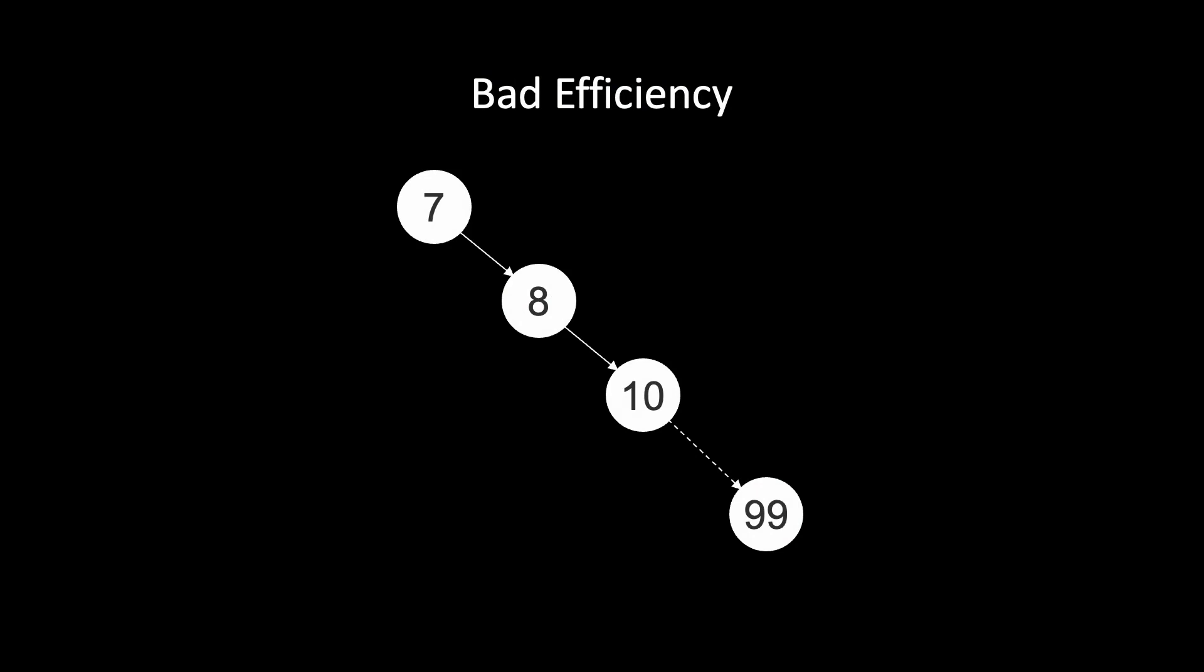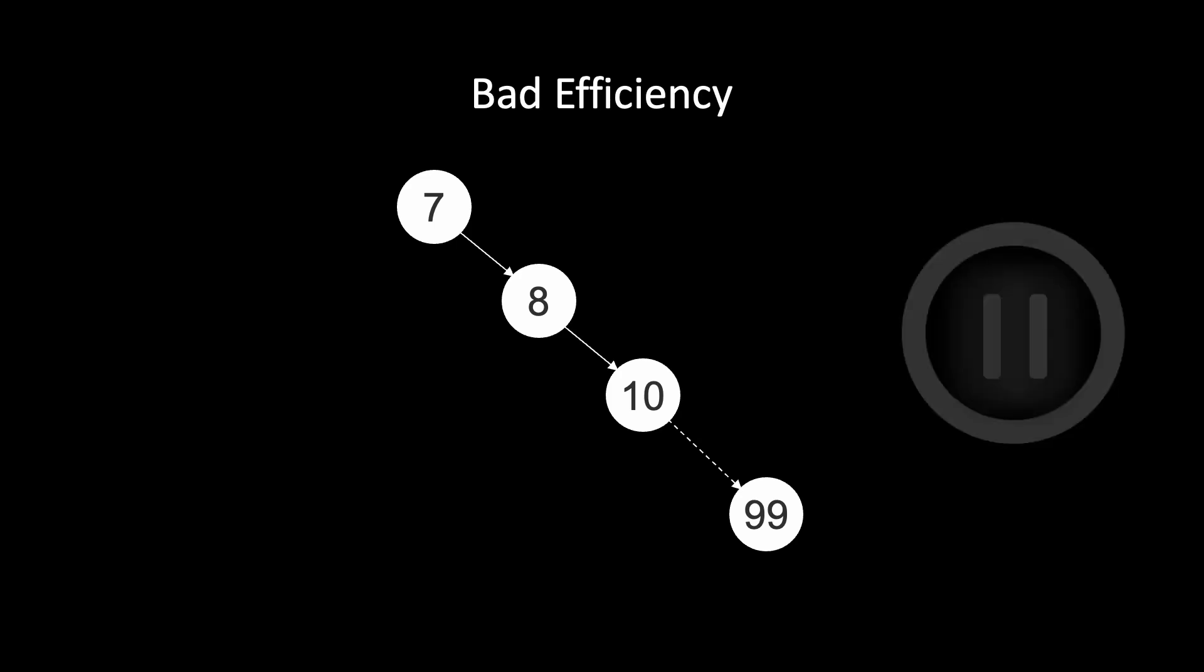If we have a tree that degenerated to a list, our search time complexity is linear in the number of keys. This is costly if we have a tree with many keys. Can you think of a possible solution to this problem?